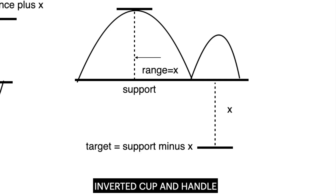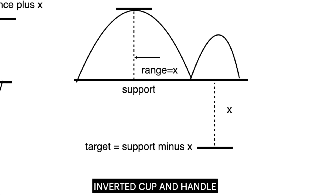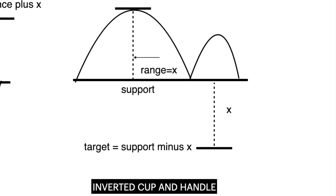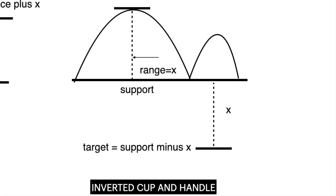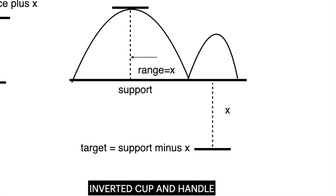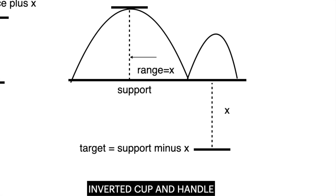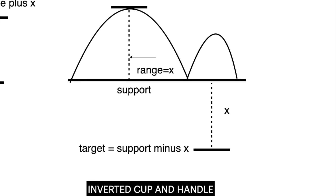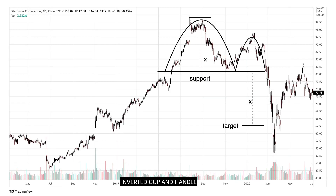The inverted cup and handle pattern is a bearish continuation pattern. It is a consolidation period that may be followed by a bearish breakout at the support. In the same way, volume should also be above the 20-day average for a valid breakout. This chart of Starbucks Inc. shows an inverted cup and handle pattern. The target for this pattern is support less the range X.